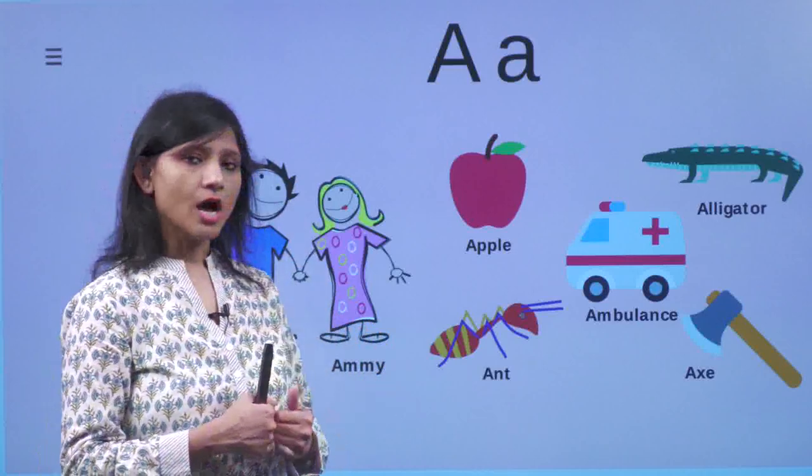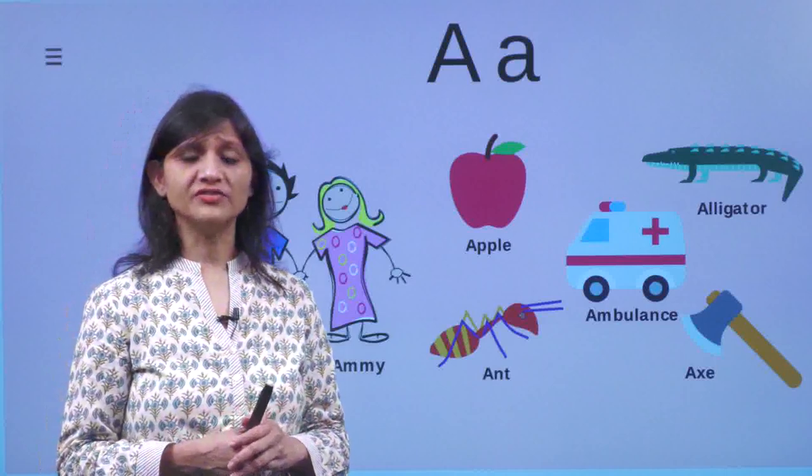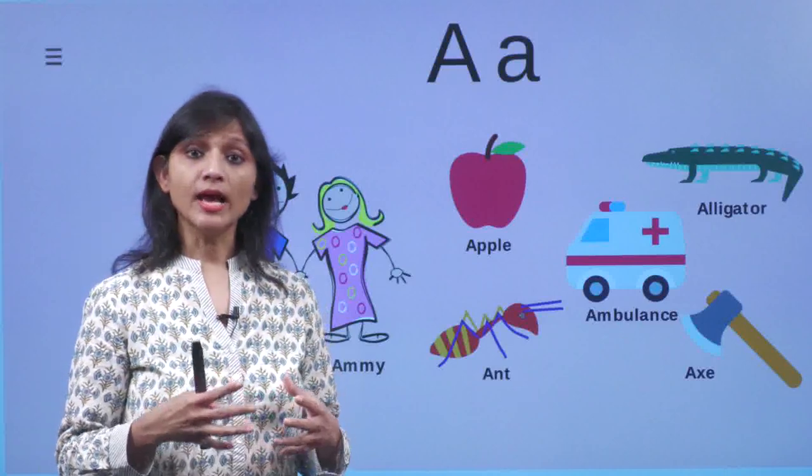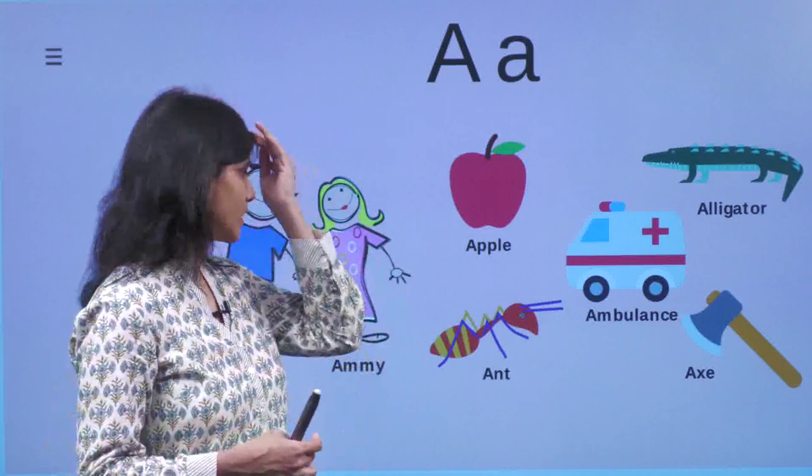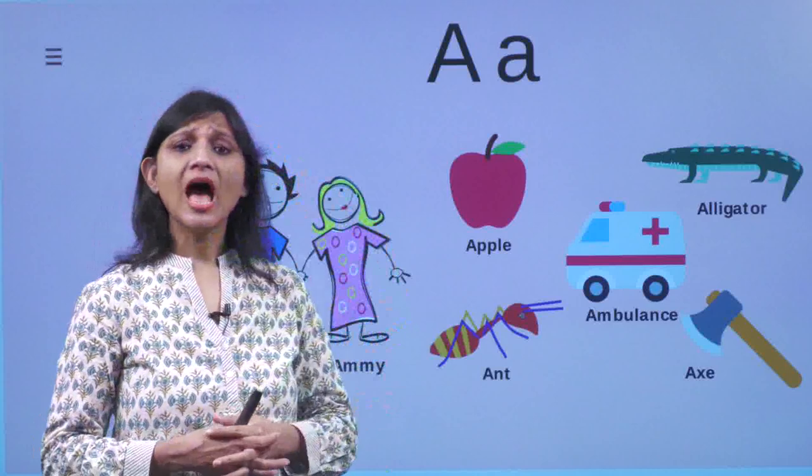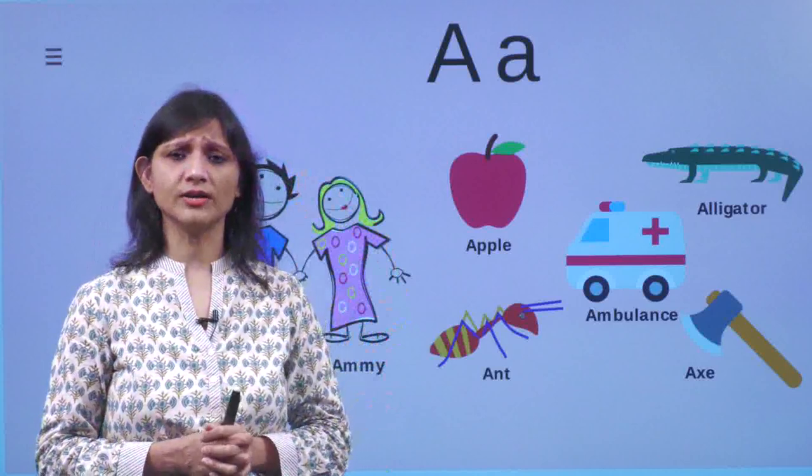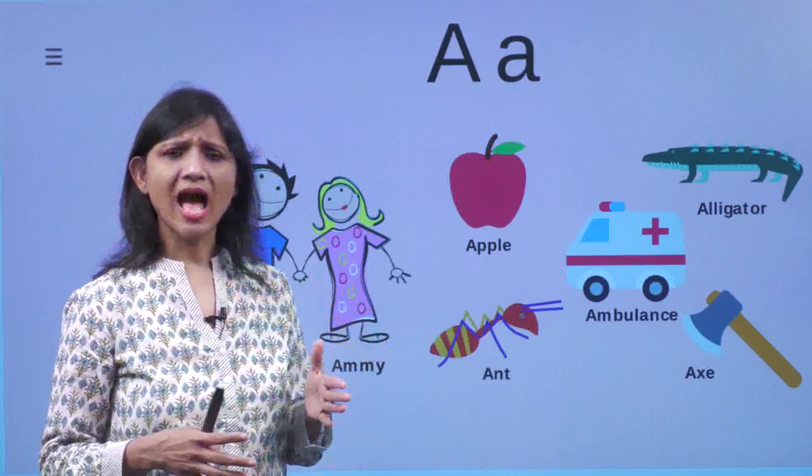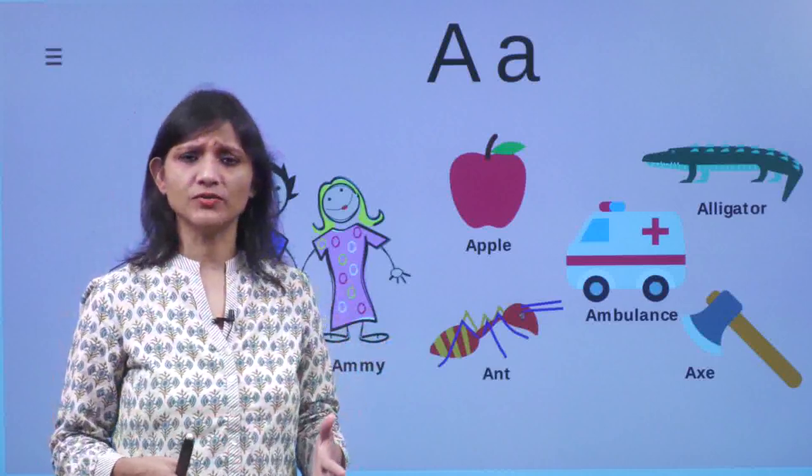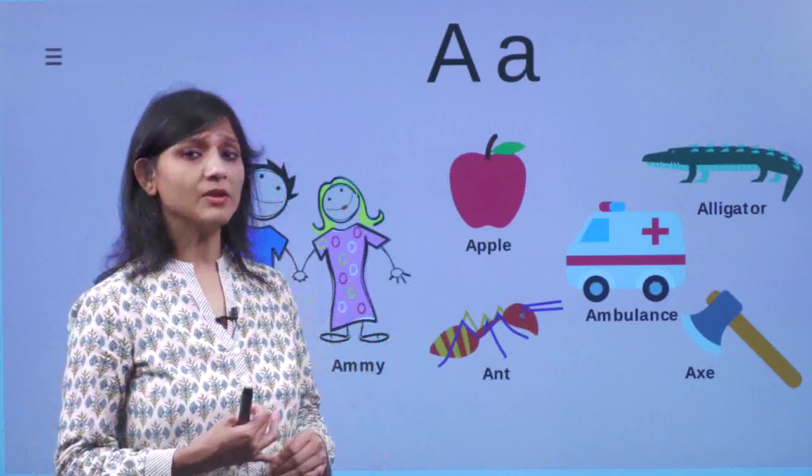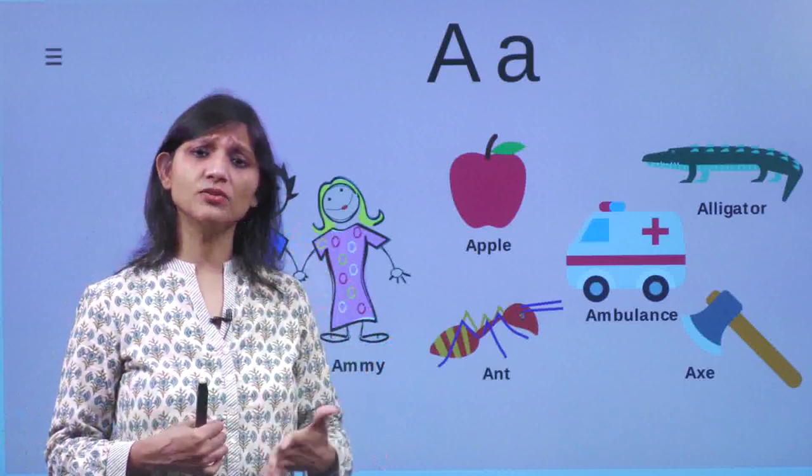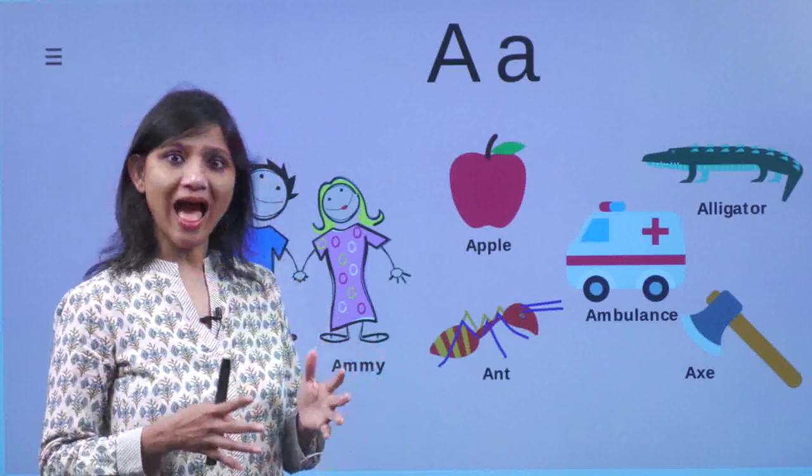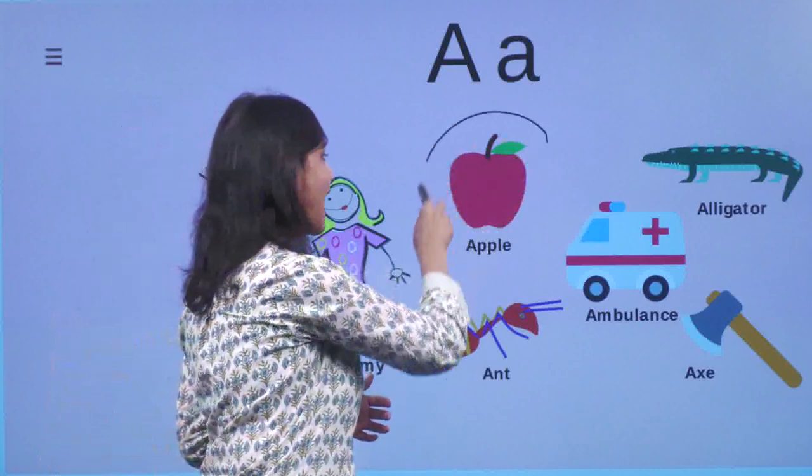After some time Abby started feeling very hungry. Both of them were very sad too because they had lost their way. Ami said to Abby, I'm feeling very hungry. Then Abby said, this is not a picnic spot, I'm not carrying anything with me. But Ami was feeling so hungry that she started crying. Then all of a sudden, Abby saw an apple tree.